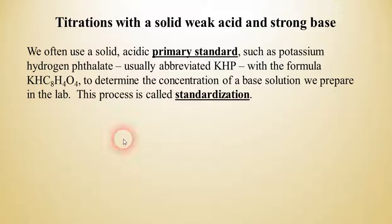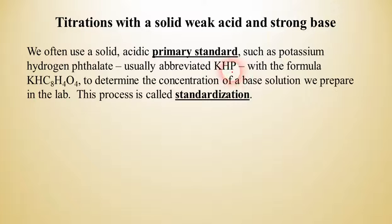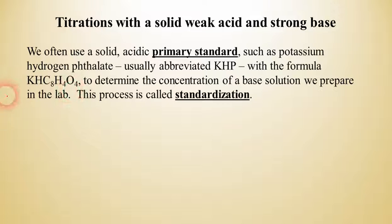A primary standard is a solid form of an acid, and it is usually something like KHP, which is potassium hydrogen phthalate. It has the formula KHC8H4O4. We can weigh that out on a balance, find its mass, dissolve it in water, and perform an acid-base titration against our unknown solution of sodium hydroxide to find the concentration of that base. This very common analytical procedure is called standardization.